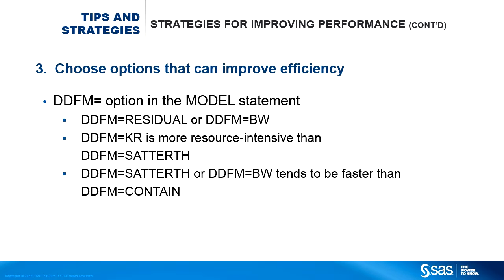Some options are more resource intensive than others, so it might be a good idea to choose options that are less computationally intensive. For example, there are many different estimation methods for the denominator degrees of freedom for fixed effects, specified using the DDFM= option in the MODEL statement. DDFM=RESIDUAL is the fastest method, while DDFM=KR is the most resource intensive. The default method, DDFM=CONTAIN, can sometimes be numerically demanding, in which case you might want to try DDFM=SATTERTHWAITE or DDFM=BW.